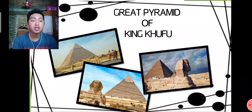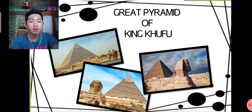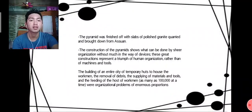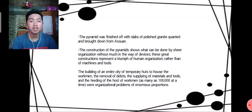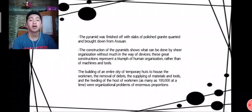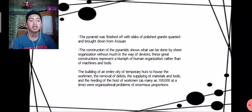These are photos of the Great Pyramid of King Khufu — it is very tall, and in front there is a statue resembling a lion with a human face. The construction of the pyramid shows what can be done by sheer organization without much in the way of devices. These great constructions represent a triumph of human organization rather than of machines and tools.